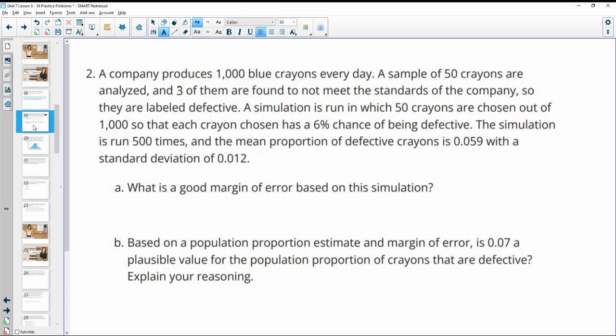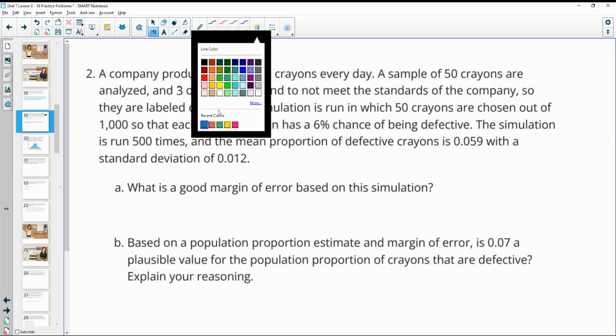Number two, a company produces 1,000 blue crayons every day. A sample of 50 crayons are analyzed and three of them are found to not meet the standard of the company, so they're labeled defective. A simulation is run in which 50 crayons are chosen out of 1,000 so that each crayon has a 6% chance of being defective. The simulation is run 500 times and the mean proportion of defective crayons is 0.059 with a standard deviation of 0.012.